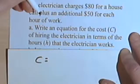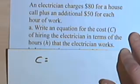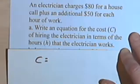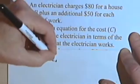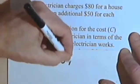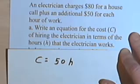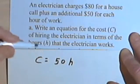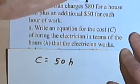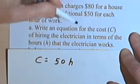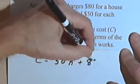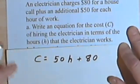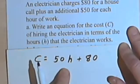He charges $50 for each hour of work. If he worked one hour, it's 50 times 1. Two hours, 50 times 2. Three hours, 50 times 3. So if he works h hours, it's 50 times h. But he also charges $80 just to show up — the house call fee. So in addition to $50 per hour, he charges $80. The equation is: c equals 50h plus 80.